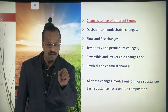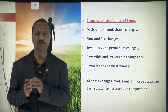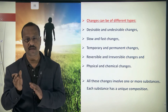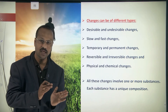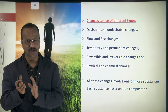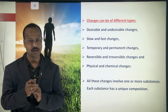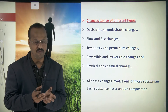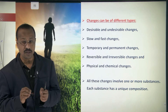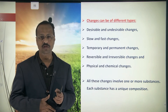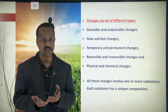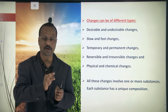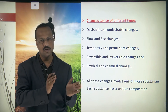Some changes take place very fast and some very slowly. Day and night have a gap of 12 hours each. Seasons change over about four months — that is slow. Digestion of food takes a few hours. But burning a piece of paper happens within seconds — that is a fast change. So some reactions are very slow and some are very fast.